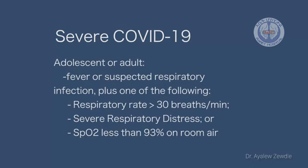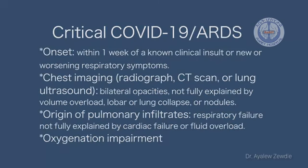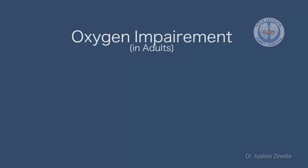Severe COVID-19 patients should be closely observed. The last classification is critical COVID-19 or ARDS — Acute Respiratory Distress Syndrome. These patients have acute onset within one week. Chest imaging — radiography, CT, or lung ultrasound — shows bilateral opacities not explained by volume overload, lobar or lung collapse, or nodules. The origin of infiltration should be pulmonary. There should be respiratory failure not explained by cardiac or other causes, and oxygen impairment.